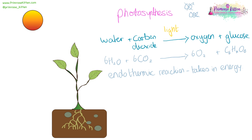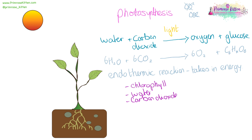There are certain requirements for photosynthesis. First of all, we are going to need chlorophyll — that is our green pigment in leaves. We are going to need water and carbon dioxide because they are our reactants, and then we are going to need sunlight. The levels of these can greatly affect how much photosynthesis takes place.